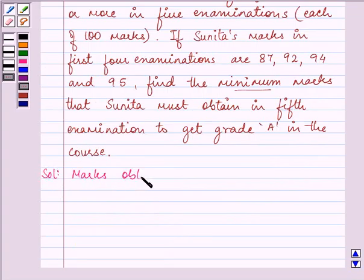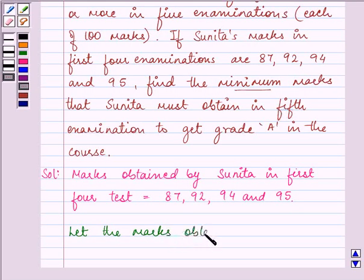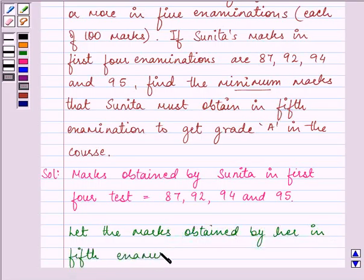Marks obtained by Sunita in first four tests are 87, 92, 94 and 95. Now, let the marks obtained by her in fifth examination or fifth test, as this is the word which is used, be equal to X.